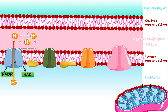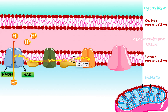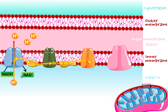Over time, many NADHs come in and drop off their hydrogens, so many hydrogen ions accumulate in the intermembrane space. At the same time, when the hydrogen is dropped off from NADH, electrons are also released. These electrons move along the electron transport chain — that's where the name comes from: the electrons are transported along this chain of molecules. The individual molecules that carry these electrons are called electron carriers.